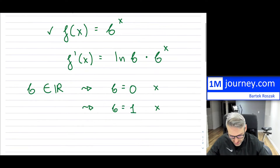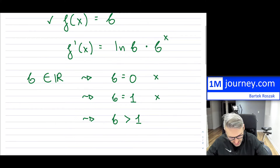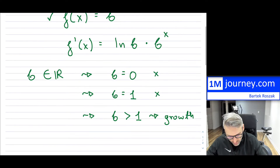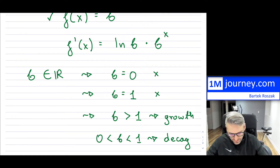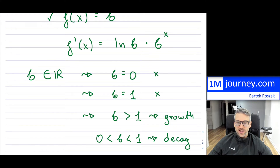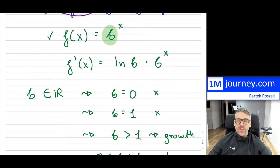What does that leave us with? It leaves us the case when b is greater than one — this is exponential growth. And when b is between zero and one, this is exponential decay, a function that is decaying to zero. These two cases are the ones we assume the base equals — either between zero and one, or greater than one.